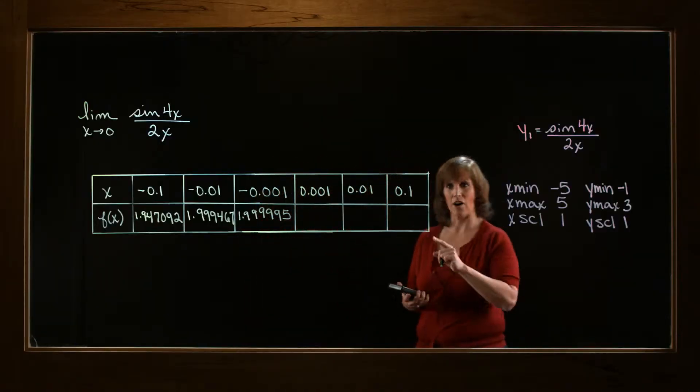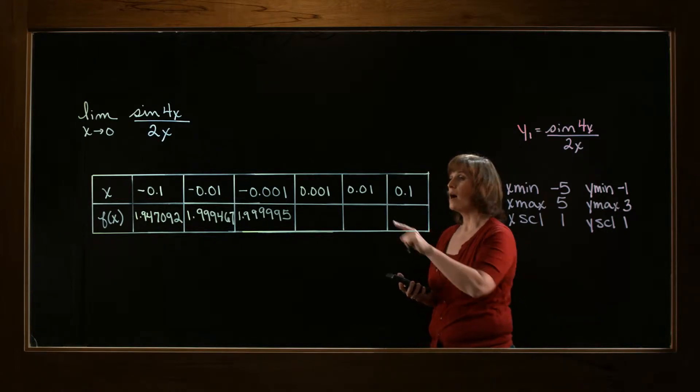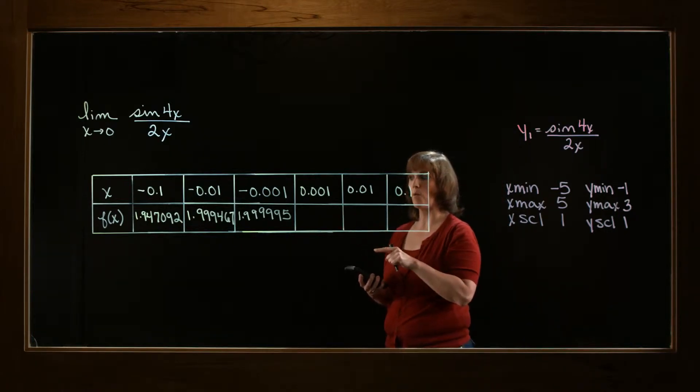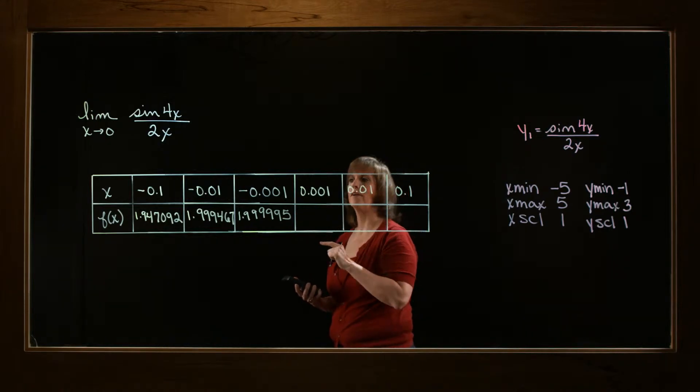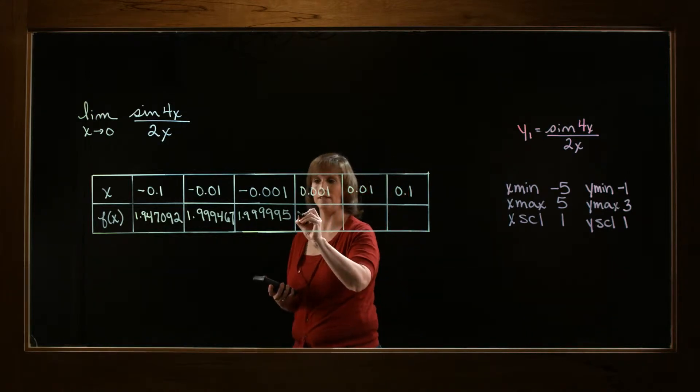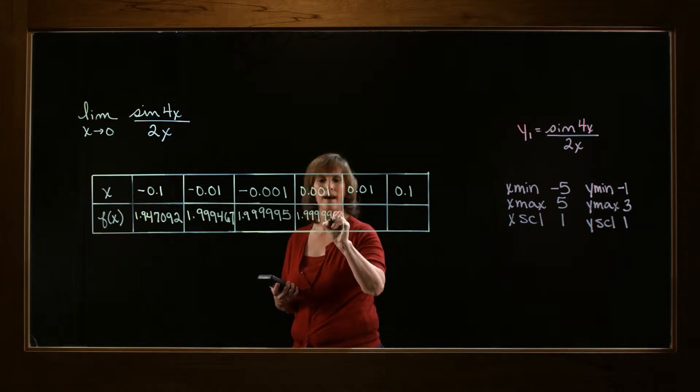Now notice I'm switching here. I'm going from negative numbers and now I'm going to plug in some positive values. But when I plug in 0.001, I'm going to get exactly the same thing I did when I plugged in negative 0.001. So this is 1.999995.